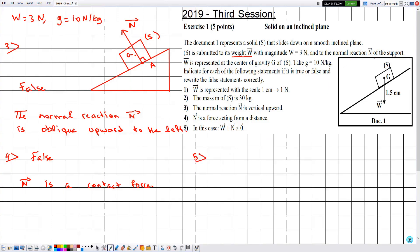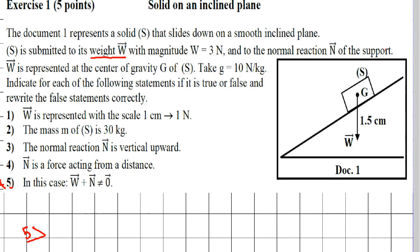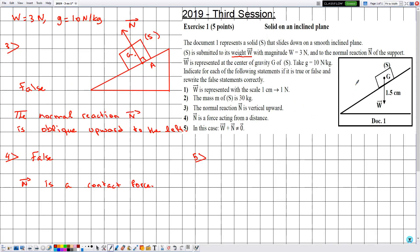Statement five says W vector plus N vector is different from zero vector. Since the solid S slides down, it is not at rest and not at equilibrium. Therefore we cannot say W + N equals zero vector. Since S is not at equilibrium, this statement is true.